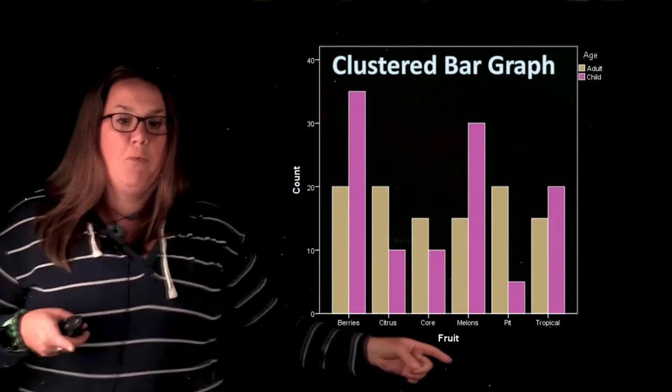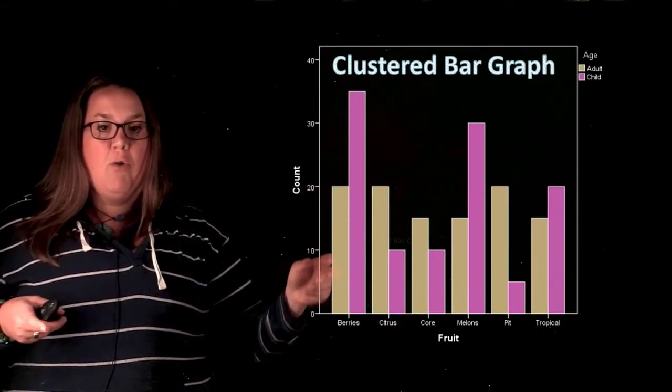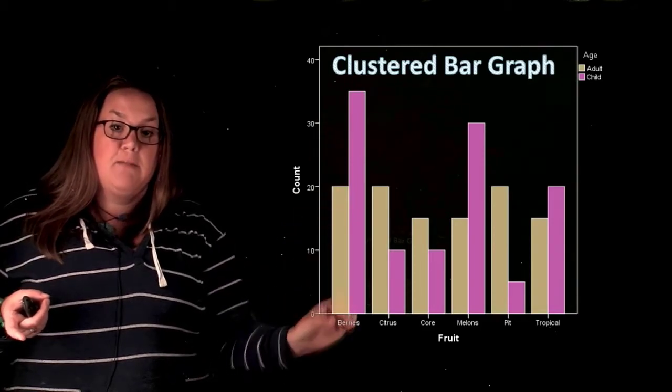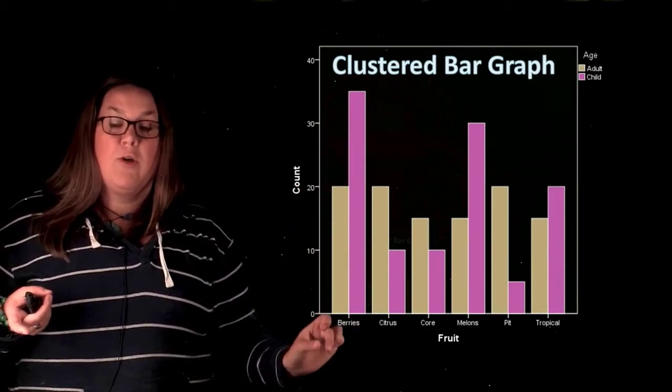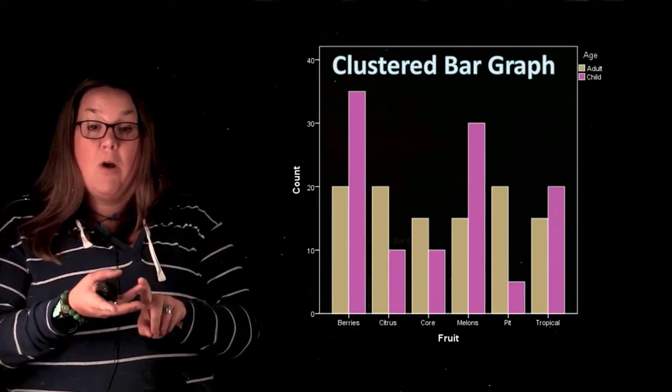So here when we have fruit and our favorite fruit is berries, you can see that because this is that kind of yellow color, this is for the adult group. So everybody represented in this bar of the bar graph is going to be people who said their favorite fruit was berries and then they're an adult.